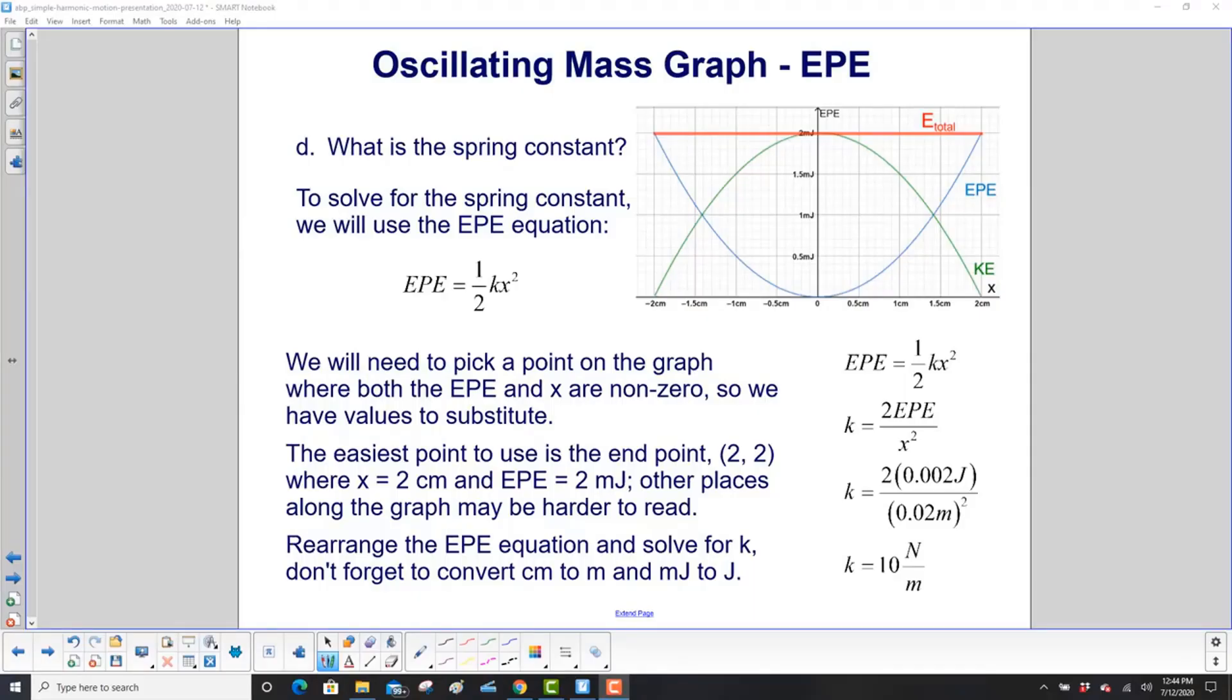What is the spring constant? To solve for the spring constant, use the EPE equation. EPE is one-half kx squared. You need to pick a point on the graph where both EPE and x are non-zero, so we have something to substitute. The neatest point would be right here, where you have two centimeters for x, and EPE is two millijoules. Any other point would work, but it's a little harder to find an exact point. So rearrange the EPE equation, and we want to solve for k.